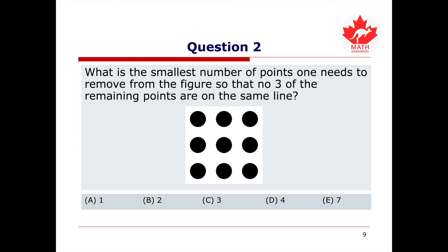Question 2 asks: What is the smallest number of points one needs to remove from the figure so that no three of the remaining points are on the same line? Please pause the video to try this question on your own before proceeding to watch the solution.